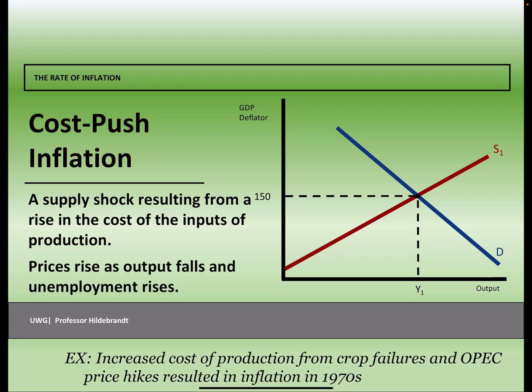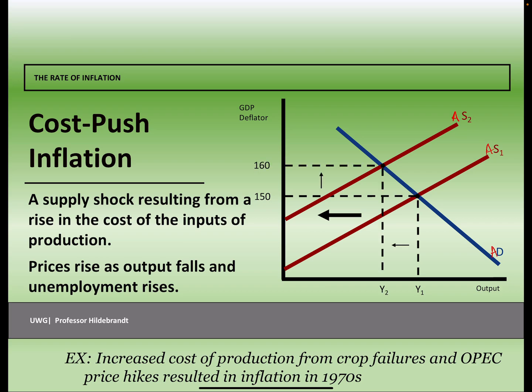The second source of inflation is called cost-push, also known as a negative supply shock. Prices are going to rise while output is actually falling and unemployment is rising, so this one is definitely more problematic. We experienced this in the United States during the 1970s — increased costs of production from worldwide crop failures and the OPEC embargo caused oil prices to soar, leading to a decrease in aggregate supply shifting to the left. In this example, the price level increased from $150 to $160.